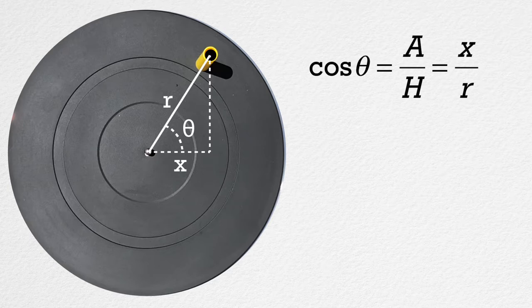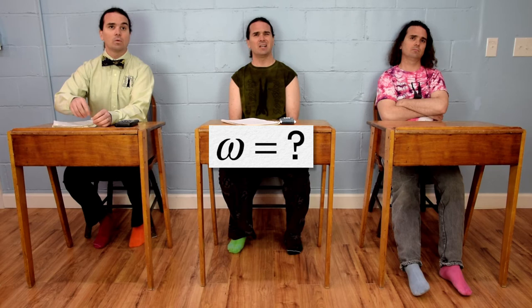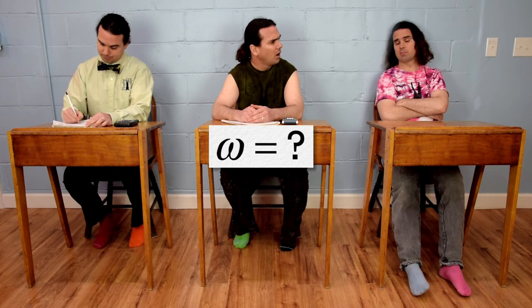Our goal is to determine the position of the cap as a function of time, so we need to get time into the equation. Bobby, what is the equation for angular velocity? I thought this was simple harmonic motion. Remember, we are relating simple harmonic motion to circular motion, so it must end up being useful somehow.